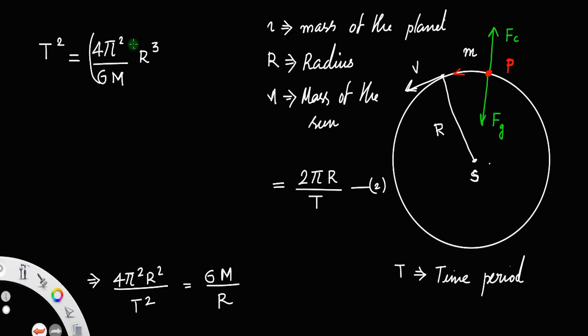The factor 4π² and GM are all constants. So T² equals a constant k times r³, where k equals 4π² divided by GM, which means T² is proportional to r³. This equation is called Kepler's third law of planetary motion, which means the square of the time period is proportional to the cube of the distance between the planet and the sun, or simply the radius.